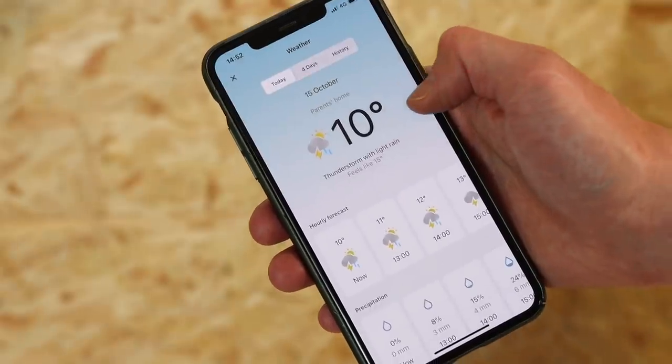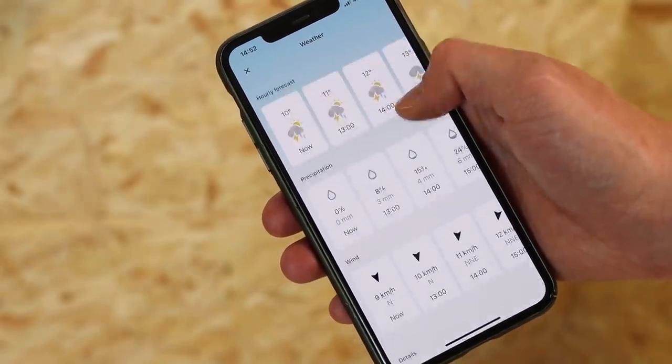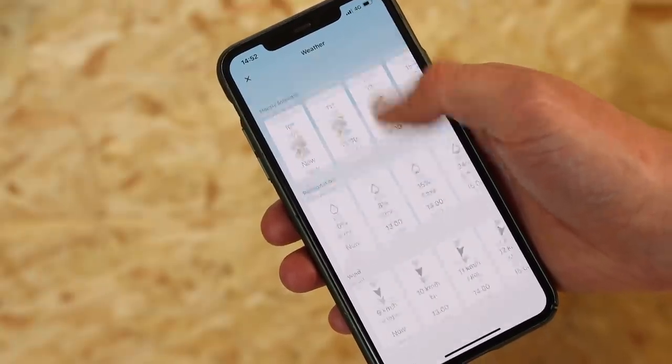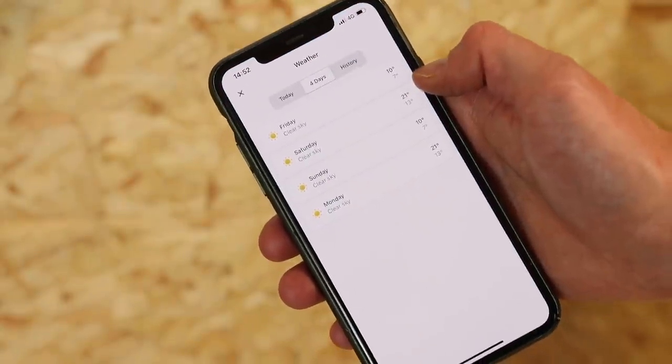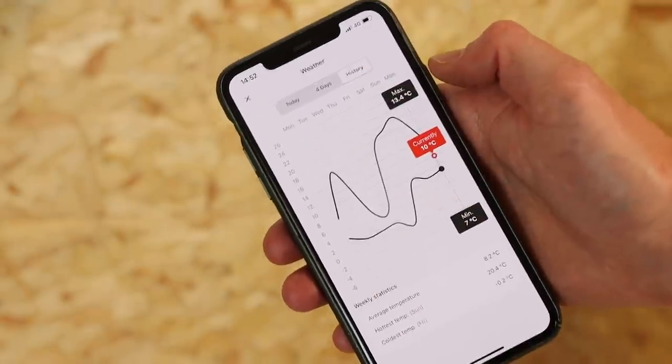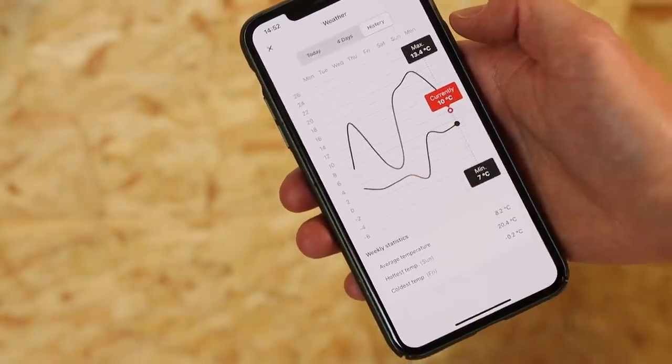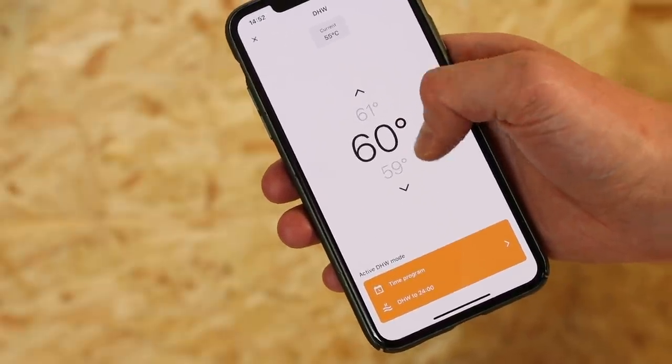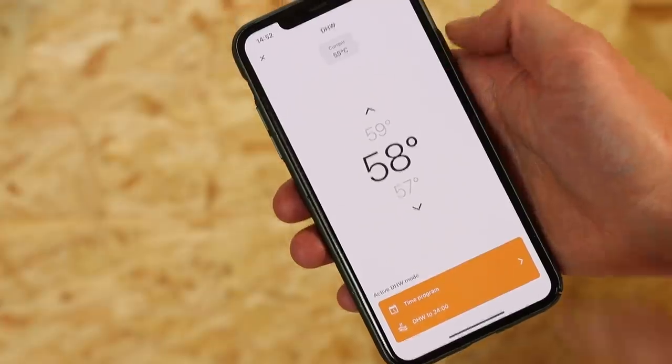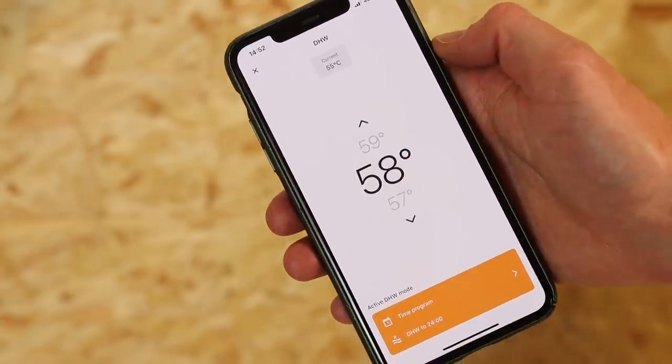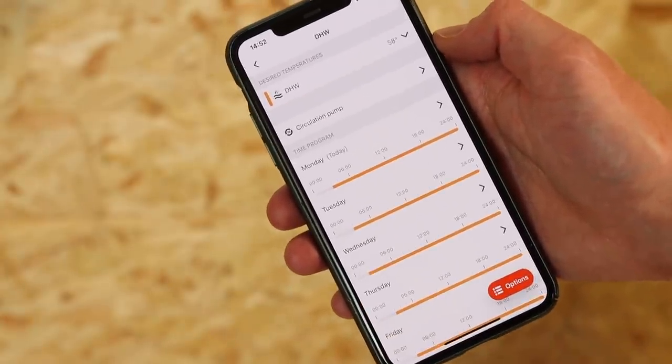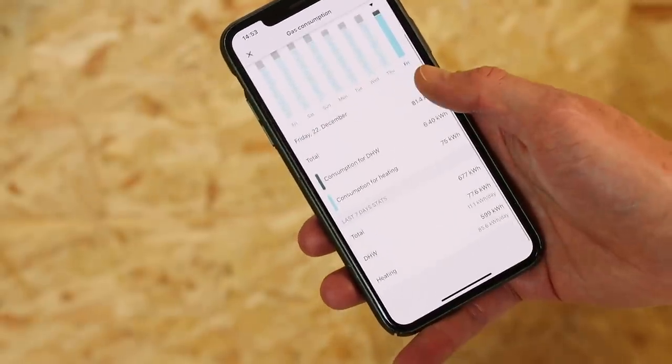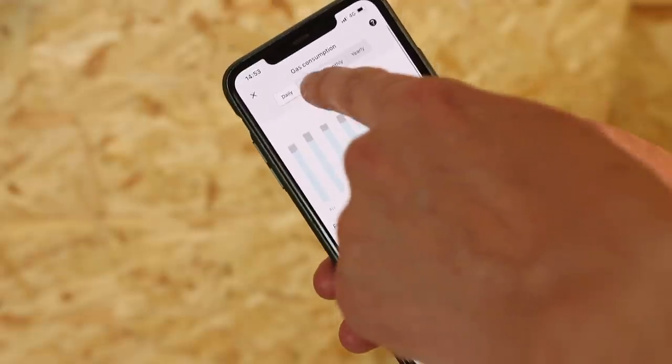The next section is the weather. So the application pulls in local weather data based on your geographical location. It then uses this data to optimise the boiler's performance. You also can see historical data of weather within your area. This section here allows us to adjust the domestic hot water temperature. So we can set the temperature we want it to be and if we've got a system boiler, we can also set the times we want the hot water to come on and go off.